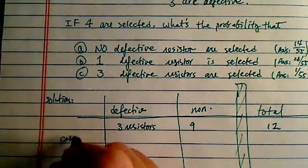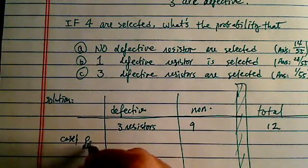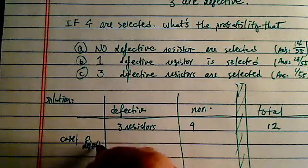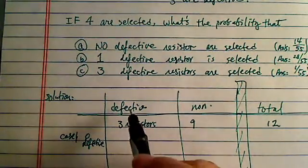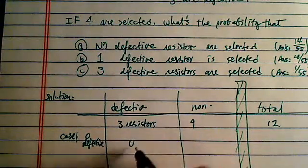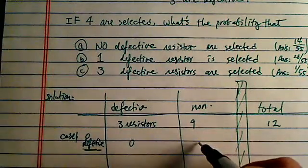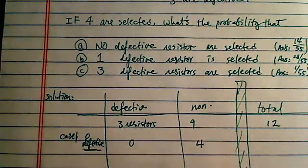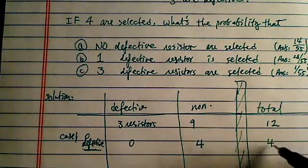So our case 1, we want 0 defective. So after 0 defective here, then I want to choose 0 from here. Since it's 0 defective, I want all 4 of them choosing out here. And then total I choose 4.